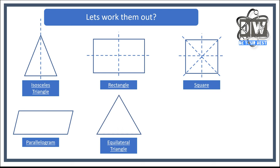Equilateral triangle — how many lines of symmetry does that have? We've got one through there, two through there, and one more which cuts through there — so three lines of symmetry.